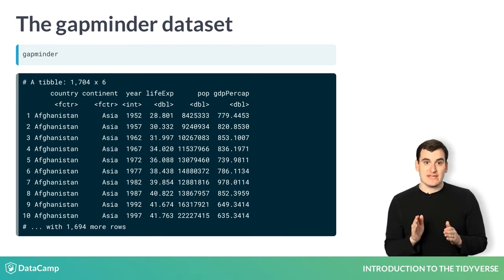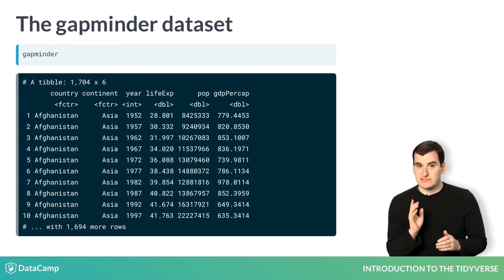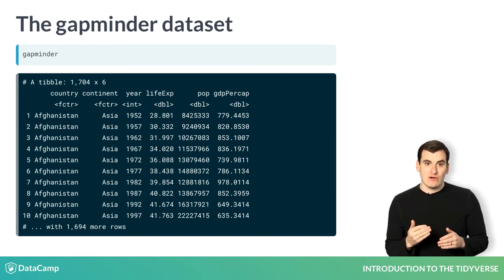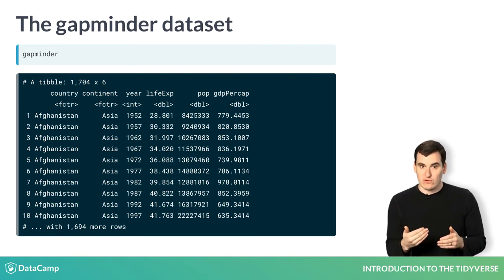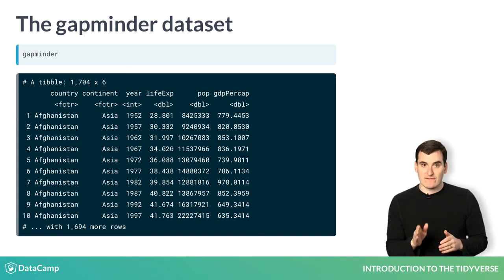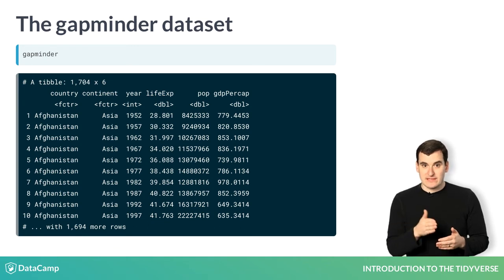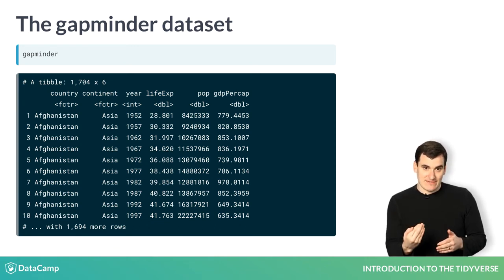This tells you that the tibble has 1,704 rows, each of which we call an observation. It has six columns, each of which we call a variable. It's important in an analysis to understand what each observation, or row, represents. Here, each represents a unique pair of a country and a year. For example, the first observation represents country statistics for Afghanistan in 1952, the second for Afghanistan in 1957, and so on.